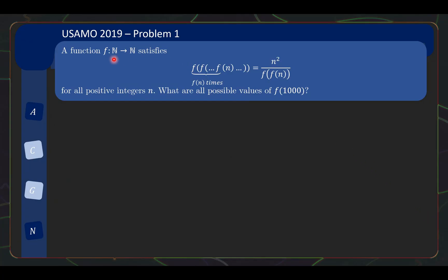As mentioned, this is problem 1 from the USAMO 2019, and we have a number theory functional equation that's really interesting. We are given a function f from N to N, so N here is referring to the positive integers, and it satisfies this crazy looking equation here.